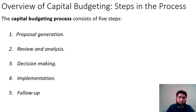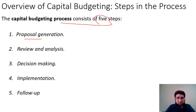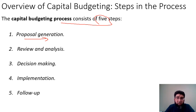Let's look at the capital budgeting process. There are many different ways it is explained across different websites and books. Here, we divide this process into five steps. The first is proposal generation, where the firm invites proposals from different departments and different levels about different projects that will add value to the company.